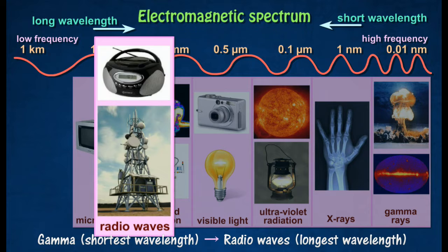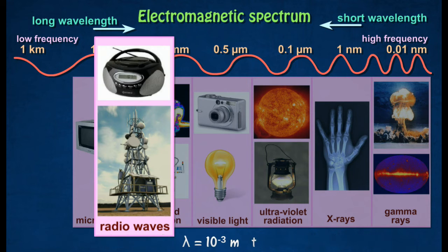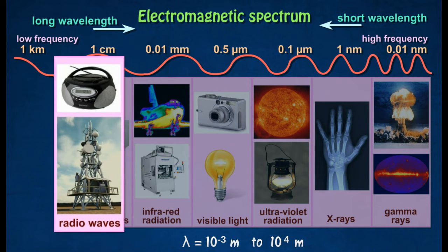Radio waves are often used for radio communication and television transmission. Electric oscillators and transmitting antennae are the source of radio waves.